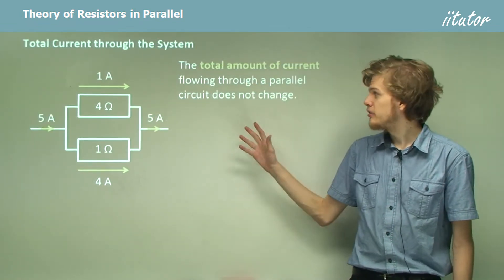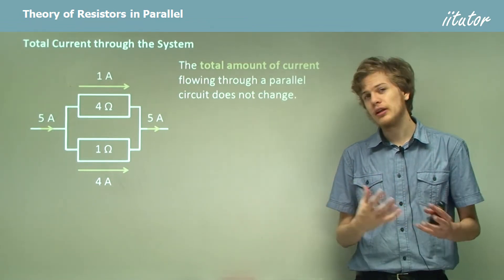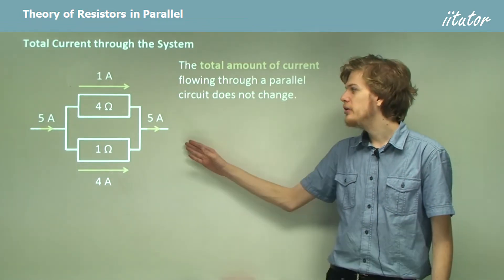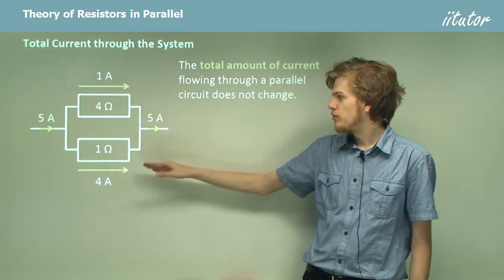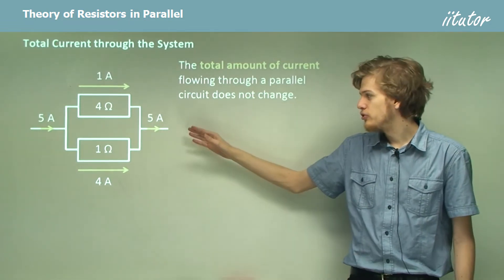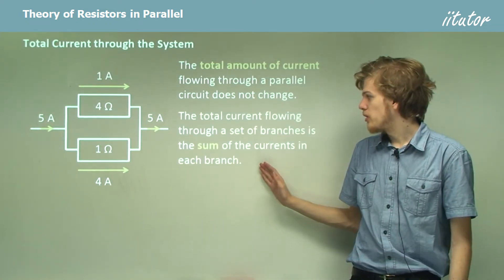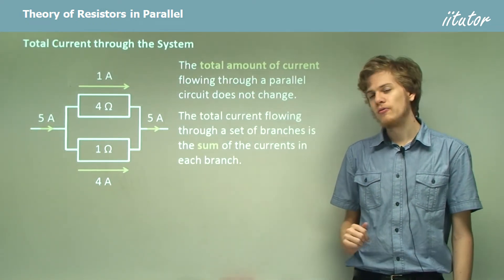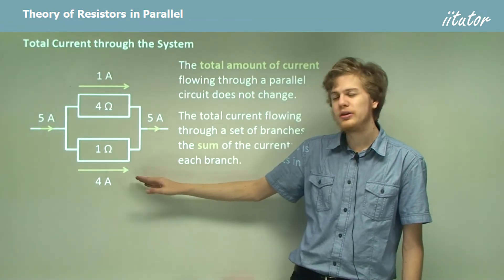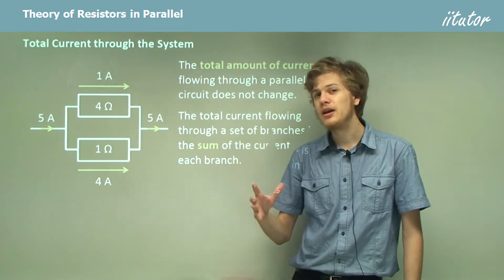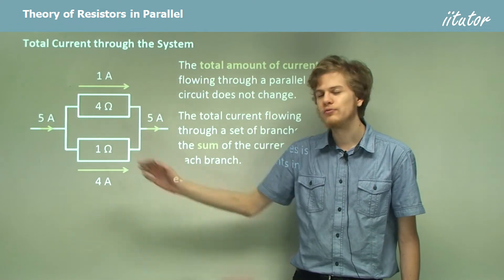The total amount of current that flows through a parallel circuit does not change. Current is caused by the movement of electrons, and we only have so many electrons passing through the wire per second. Adding the currents through each resistor together lets us find the total current flowing into that set of resistors. So the total current flowing through a set of branches is the sum of the currents in each branch — in this case, one amp plus four amps produces five amps total.